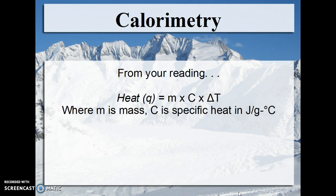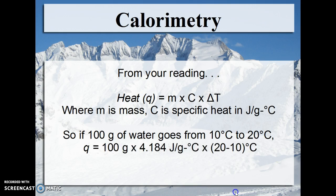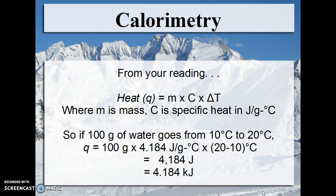From the reading, heat Q equals M (the mass of the water) times the specific heat in joules per gram·degree times the temperature change. So if 100 grams of water goes from 10°C to 20°C, Q is 100 grams times 4.184 (the specific heat capacity of water) times (20 minus 10) degrees Celsius. This gives 4,184 joules — not kilojoules or calories. That's 4.184 kilojoules, dividing by 1,000 joules per kilojoule.